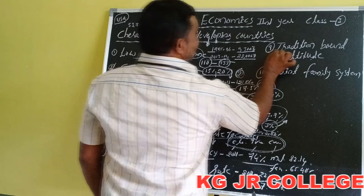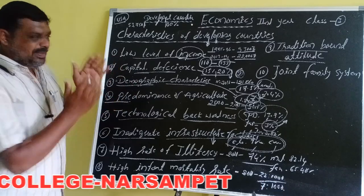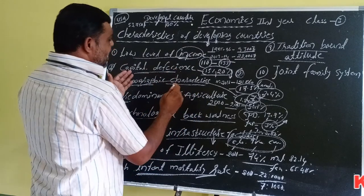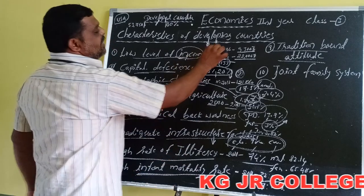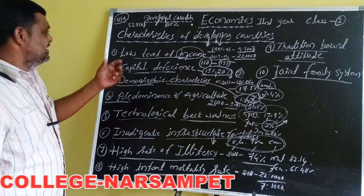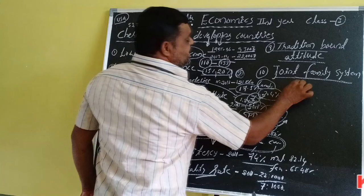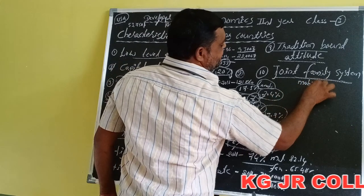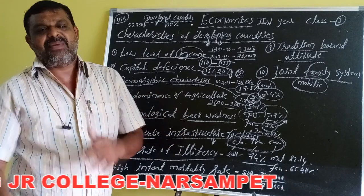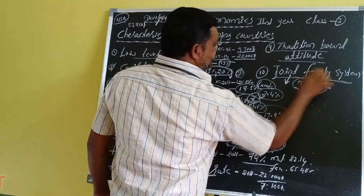Another characteristic is tradition, bonds, and attitude. In India, so many religions, so many castes, and sub-castes exist. These reasons prevent modern technology and modern methods from being implemented. Finally, the joint family system is also one of the important characteristics — it leads to non-mobilization of labor, meaning a laborer does not transfer from one place to another.